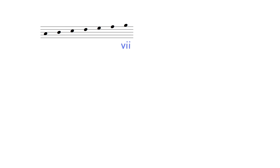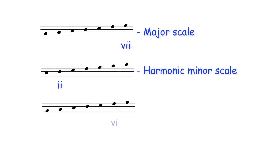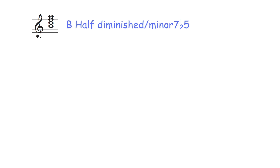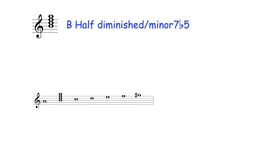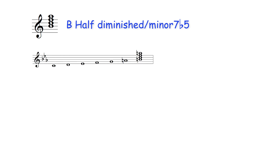Half diminished or minor seventh flat five chords occur on the leading note of a harmonized major scale, the supertonic of a harmonized harmonic minor scale, and the submediant and leading note of a harmonized melodic minor scale. A B half diminished or B minor seventh flat five chord therefore can be chord VII in C major, chord II in the A harmonic minor scale, chord VI in the D melodic minor scale, and chord VII in the C melodic minor scale.